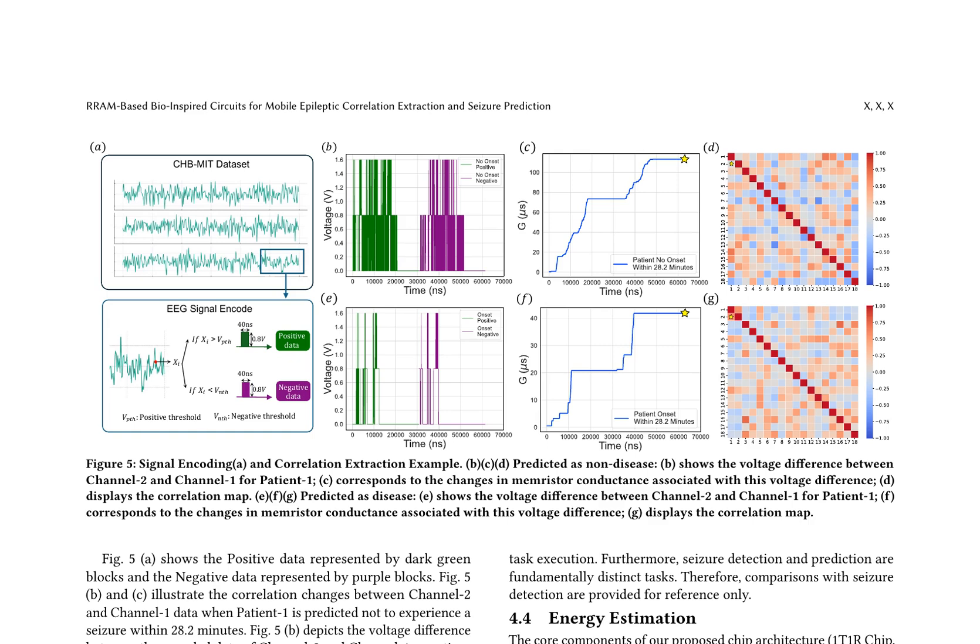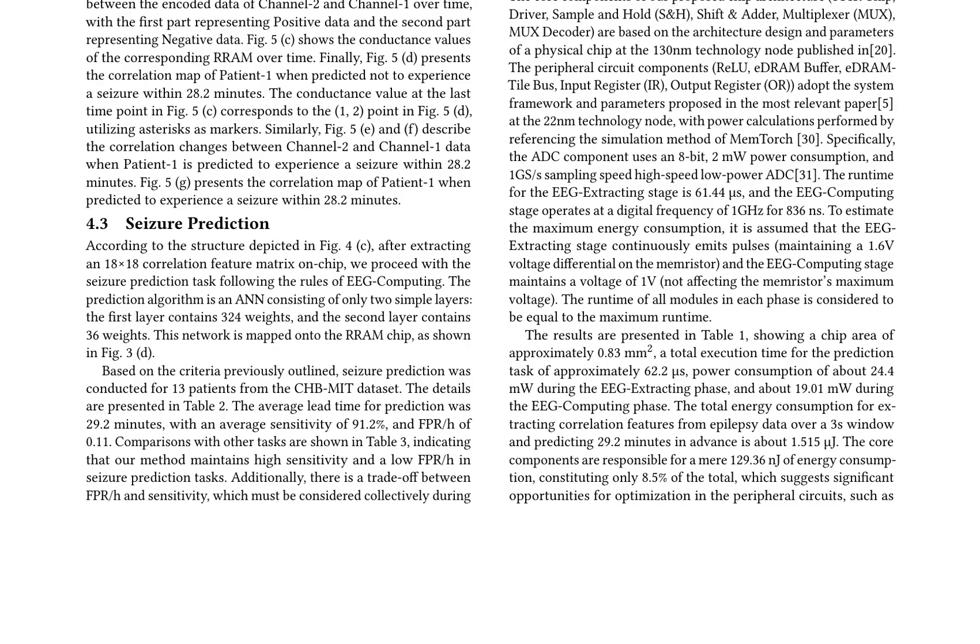Researchers have developed RRAM-based bio-inspired circuits for mobile epileptic correlation extraction and seizure prediction. The signal encoding and correlation extraction process is demonstrated using the CHB-MIT dataset. A prediction algorithm, implemented as an artificial neural network (ANN), is mapped onto the RRAM chip. The authors report seizure prediction results for 13 patients, achieving an average lead time of 29.2 minutes, an average sensitivity of 91.2 percent, and a false positive rate per hour (FPR/H) of 0.11.